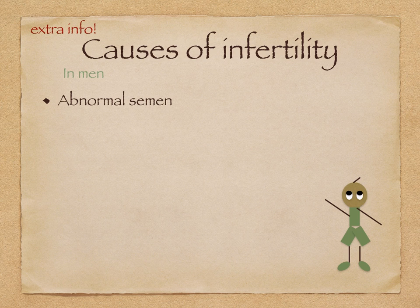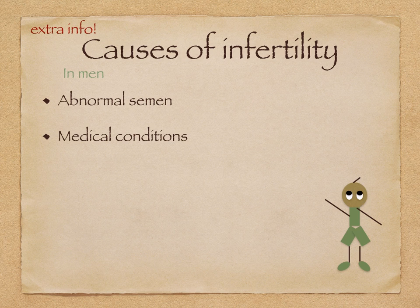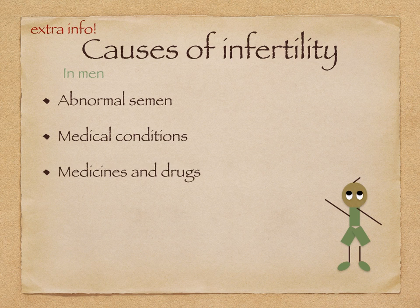Infertility in men may be due to abnormal semen, which is the most common cause of male infertility, including a low sperm count or decreased sperm motility. An autoimmune reaction can also cause the sperm to be destroyed — this is when the immune system destroys the sperm. Medical conditions, for example cystic fibrosis and chlamydia infections, can cause the vas deferens to become blocked. Reduced testosterone can lead to sperm not being produced. Cancer drugs and anabolic steroids also reduce sperm production.